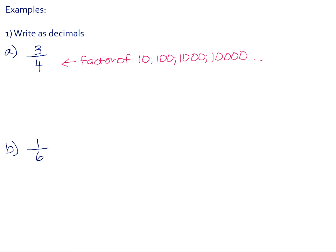All you need to do is rewrite that fraction with a denominator of 10, 100, 1000, or 10000 depending on the factors. So 4 is not a factor of 10, but it is a factor of 100 — 100 divided by 4 is 25. So if I times 4 by 25, it gives me 100. Whatever I do to the denominator I must do to the numerator to keep it equivalent. So 3 times 25 is 75, 4 times 25 is 100. As a decimal, 100 has two zeros so we have two decimal places, giving us 0.75.